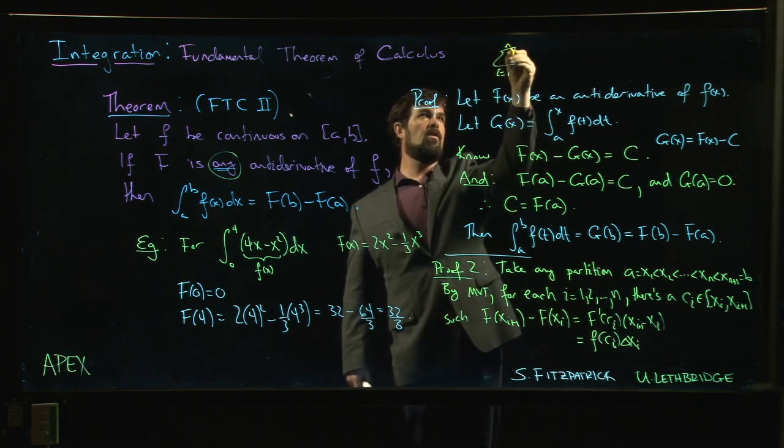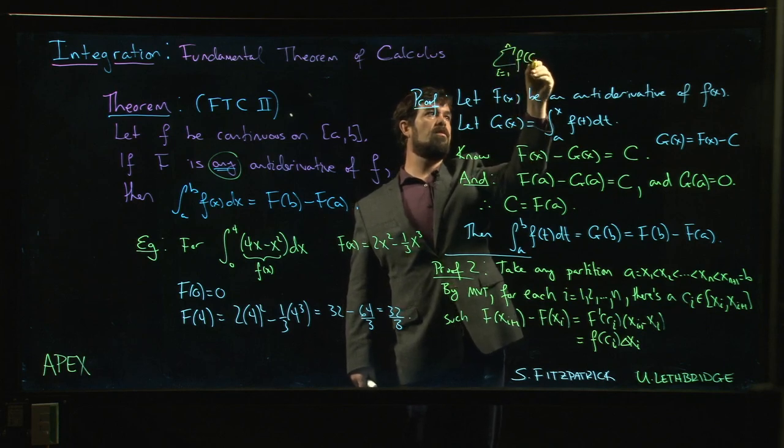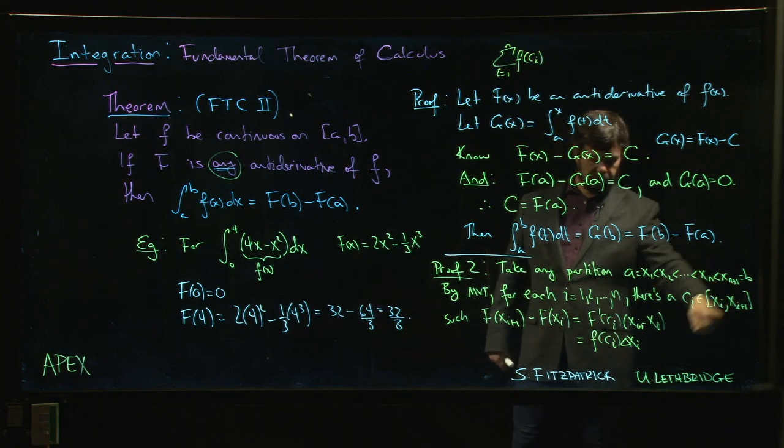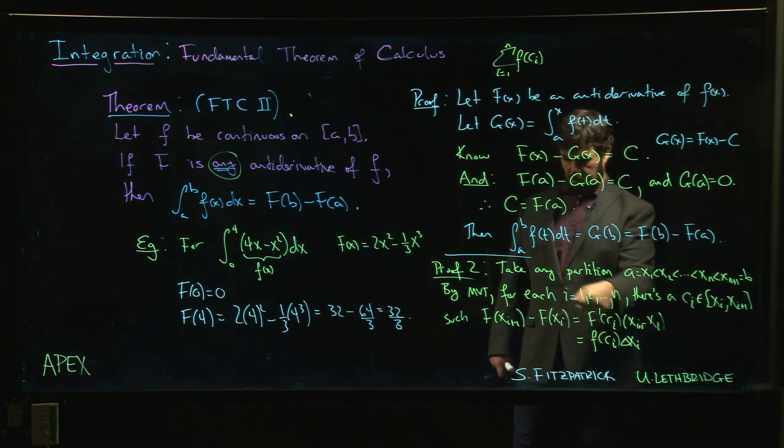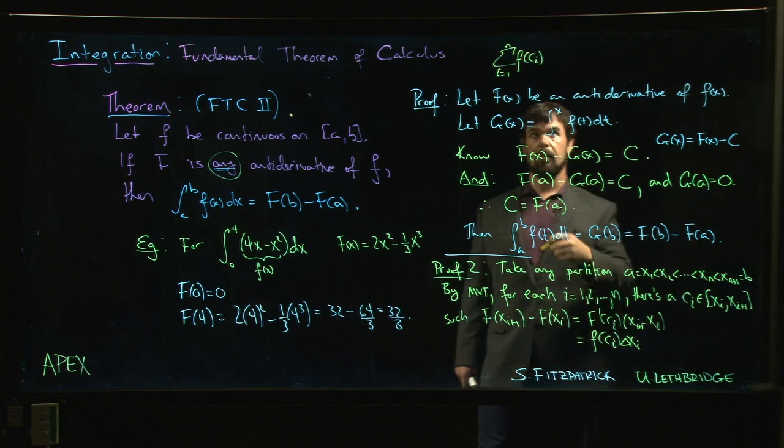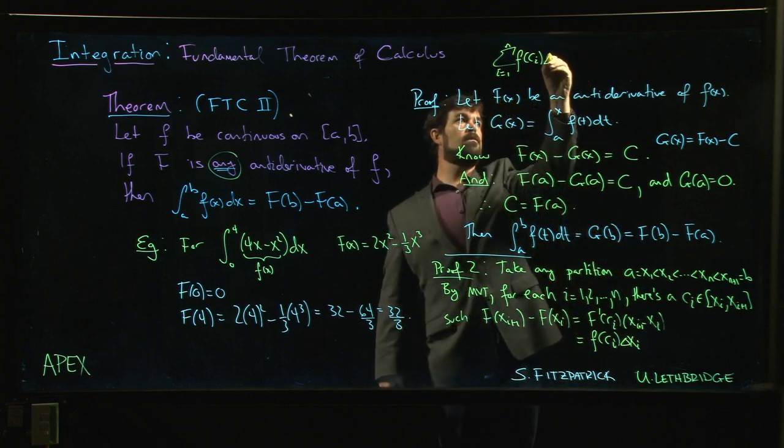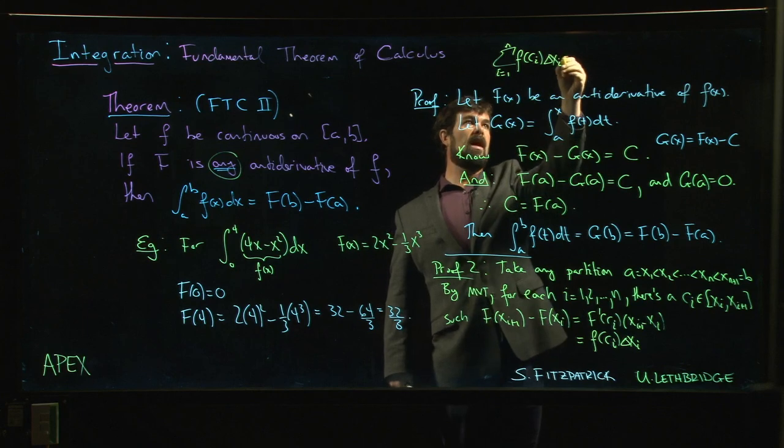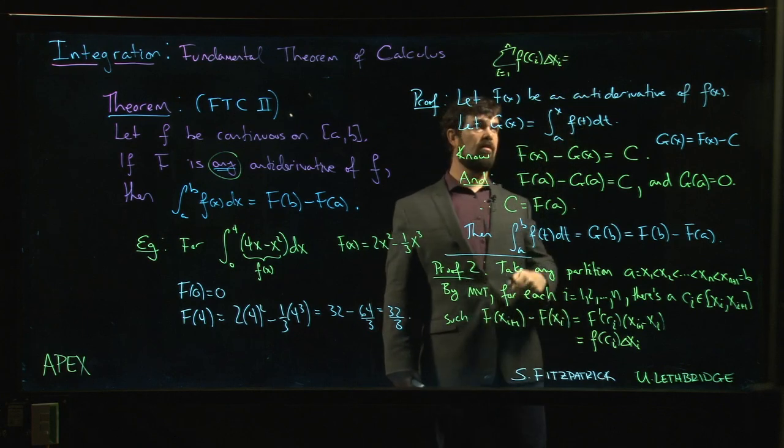If you take the Riemann sum, i going from one to n, remember that in the Riemann sum you're allowed to evaluate f at any point in this interval. So let's choose that point that makes this work, right, this one that's given by the mean value theorem. There's our Riemann sum.